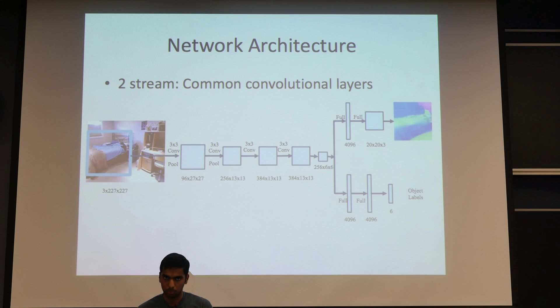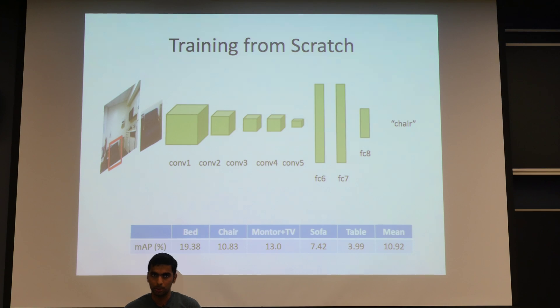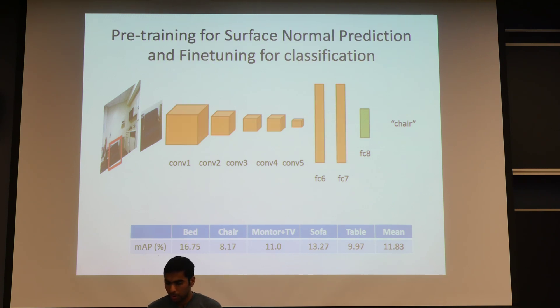Some experiments and results. As a baseline, we first started out with a network to only do classification. We basically take AlexNet and initialize to random weights and train it only using the bounding box labeled data that we have, and that gave us around 11% MAP. Next, instead of starting with a randomly initialized model, we started with a network which was pre-trained on our task of predicting surface normals itself, and that gave us a 1% boost in MAP.